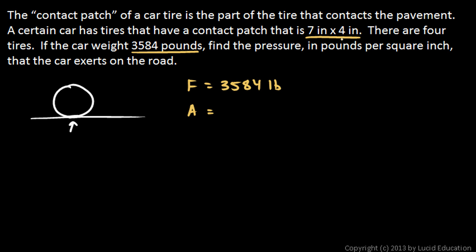Well, the area is just going to be the area of the contact patch times 4. So this is 7 inches by 4 inches, and that's obviously 28 square inches. That's for one tire. We need to multiply that by 4, because there are four tires. So 8 times 4 is 32. 4 times 2 is 8. Plus 3 is 11. 112. So it's 112 square inches for the area.